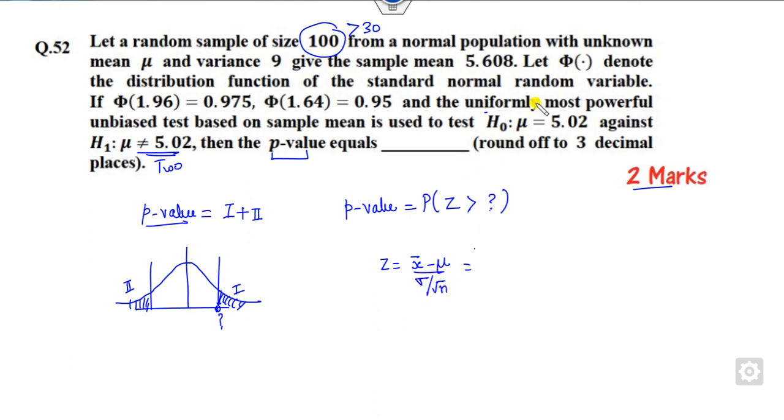What is the X bar? The sample mean is given to you, 5.608. What is the mean? Mu is my 5.02. What is the variance? Sigma. Variance is 9, so sigma is 3, root of 100. So after the calculation, it's 10. So it's 0.3. So this is my 1.96.